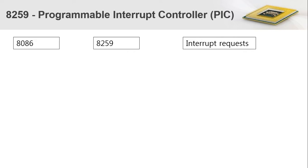Hi everyone, welcome back to this video tutorial. We will discuss the programmable interrupt controller IC, that is the 8259 IC, in this video. This particular 8259 acts as an intermediate between the 8086 and various interrupt requests generated by various peripheral devices. This IC is used for handling various interrupt requests more effectively.